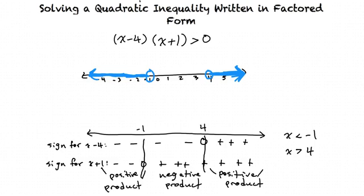So when solving a quadratic inequality written in factored form, we must perform a sign analysis to determine where the products of the two factored solutions make the inequality true. Then we graph our solution on a number line.